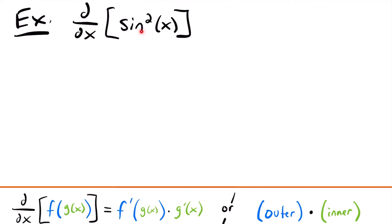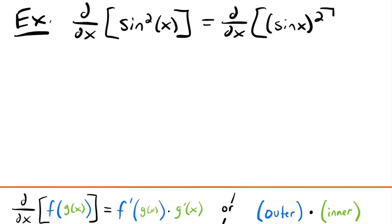For our next example, we want to find the derivative of sine squared x. This notation can be tricky, so let's rewrite it as sine x squared — meaning the quantity sine x, raised to the second power. Now it's clear that the inner function is sine x and the outer function is x squared.